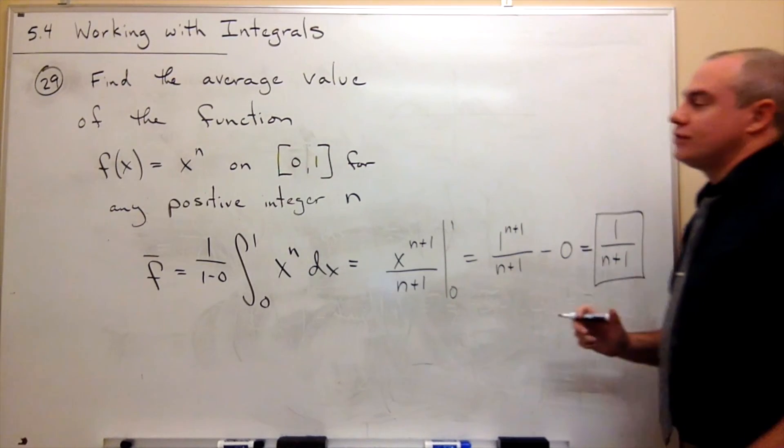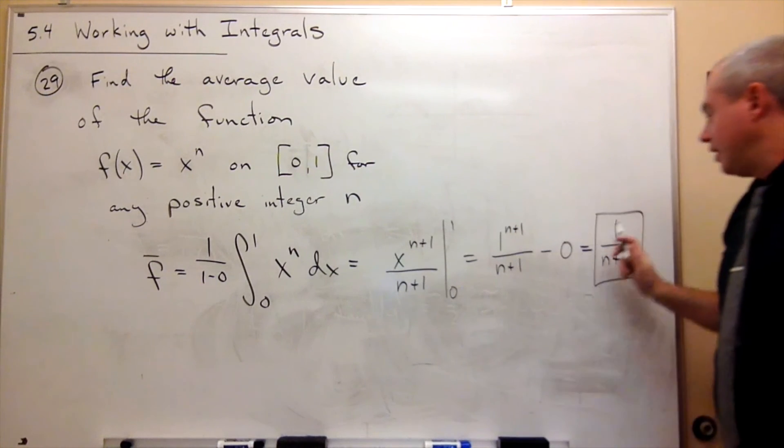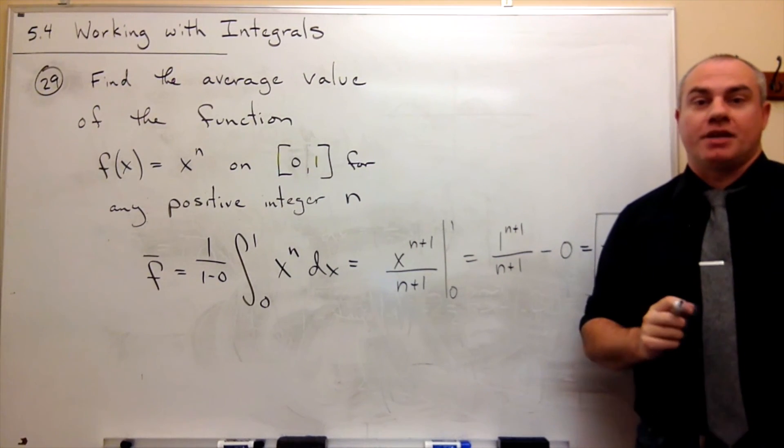And so the average value of the function x to the n over the interval 0 to 1 is 1 over n plus 1.